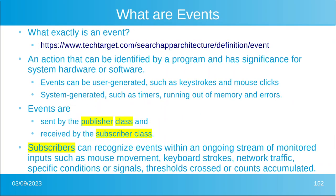So what exactly is an event? It's an action that can be identified by a program and has significance for the system — hardware or software. For example, holding a smartphone: an event could be a dog barking, but that's not significant to the phone unless you have a barking detection program. If the temperature in the room changes, the phone cannot detect it, so that event is not important to the phone. Events are only actions that can be identified and have significance to our particular hardware or software.